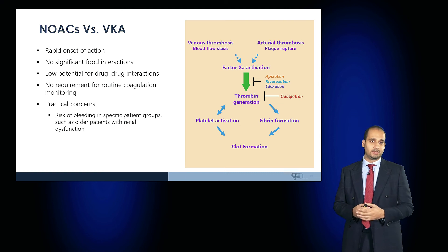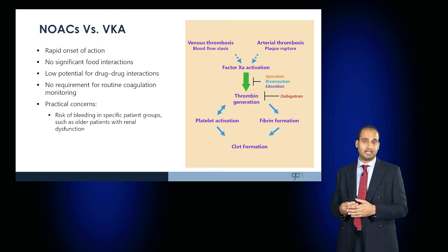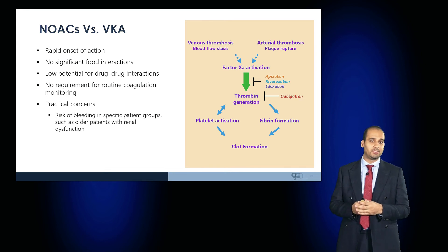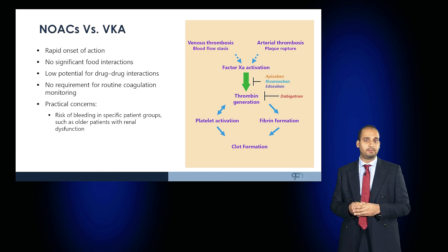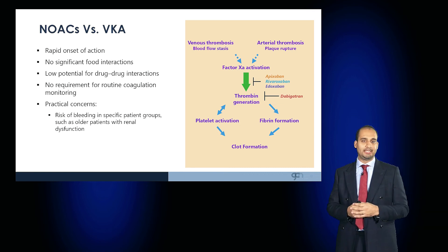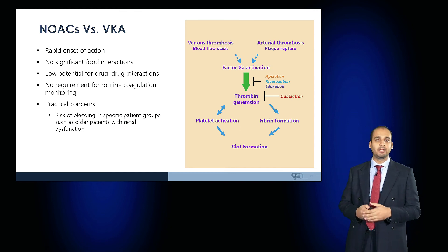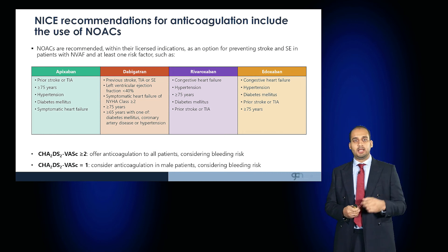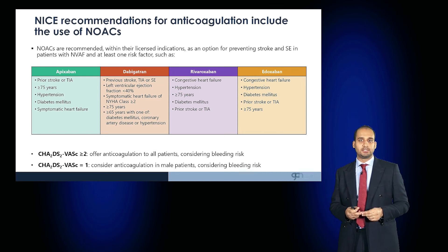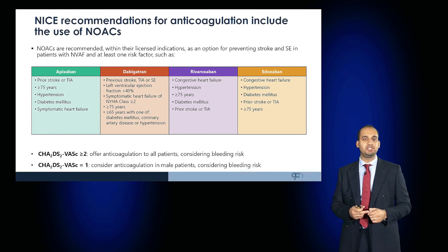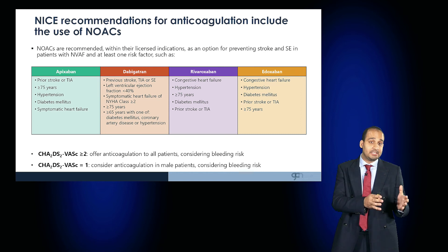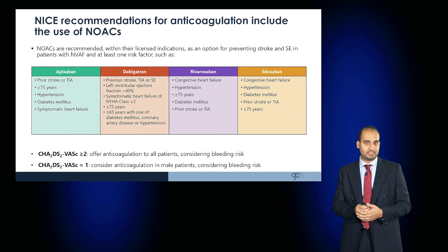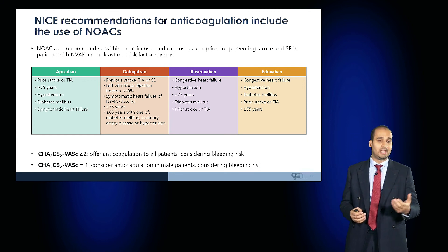As a result, newer drugs called NOACs — novel oral anticoagulants — or DOACs — direct oral anticoagulants — are now used. These have a rapid onset of action, no major food interactions for most agents, lower potential for drug-drug interactions (though important interactions still exist), and importantly do not require routine coagulation monitoring. NICE recommends NOACs within their licensed indications as an option for preventing stroke and systemic embolism in patients with non-valvular AF — that is, AF in the absence of metallic valves or mitral stenosis — with an additional risk factor such as prior stroke, increased age, hypertension, or diabetes mellitus.